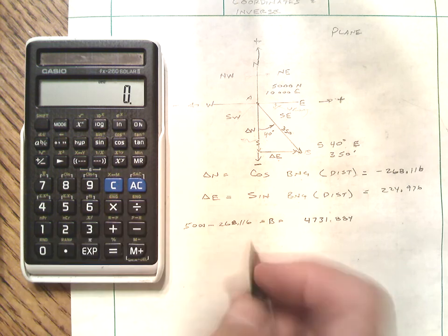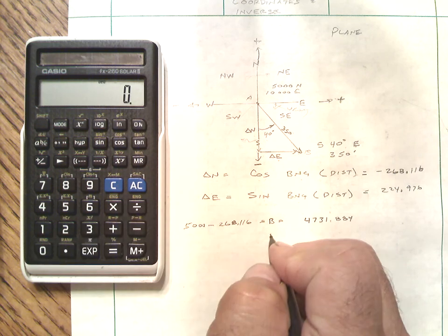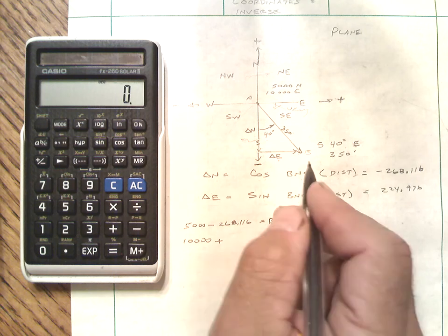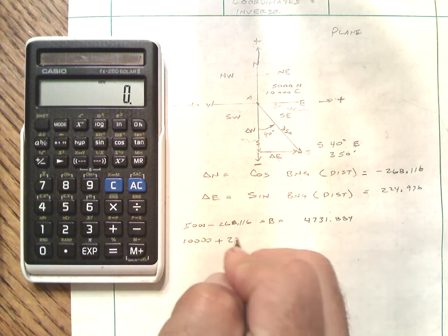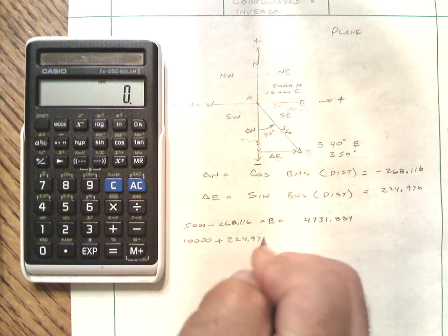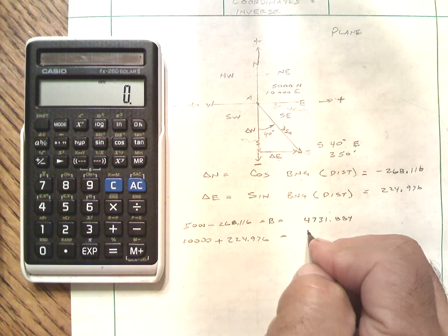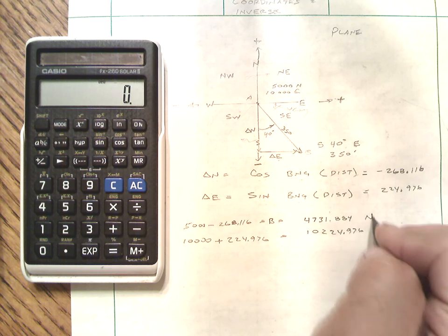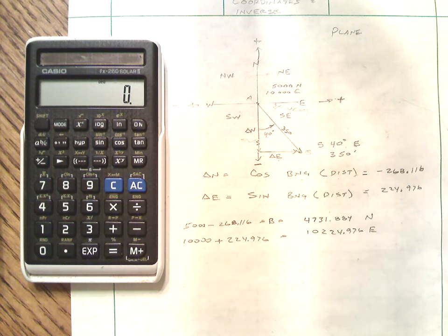And the northing, excuse me, the easting then is as simple as taking 10,000 and we're going positively. So we're going to add 224.976. So this is our now our coordinate of point B.